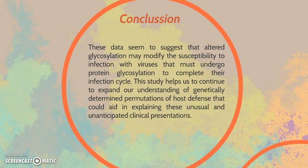Conclusion: This data suggests that altered glycosylation may modify susceptibility to infection with viruses that must undergo protein glycosylation to complete their infection cycle. This study helped expand our understanding of genetically determined permutations of host defense that could aid in explaining these initial and unanticipated clinical presentations.